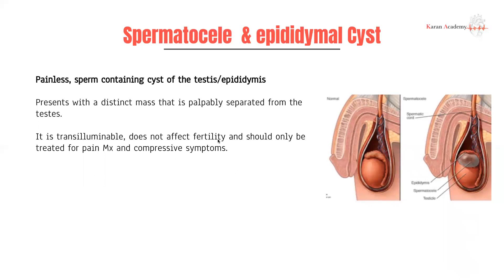Next, we have spermatoceles and epididymal cysts. These are super common conditions — about a third of males have a cyst. This is a completely benign condition where you have a painless, sperm-containing cyst either in the testes or in the epididymis. If it's in the epididymis, it's called an epididymal cyst. You can clearly distinguish its boundaries from the testes, which is important when assessing whether a mass could be cancer. It should be transilluminable since it's fluid-containing. It does not affect fertility and should only be treated if it's causing pain and compression.